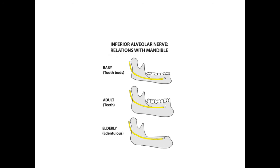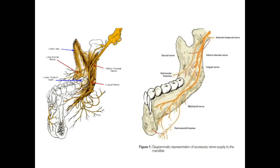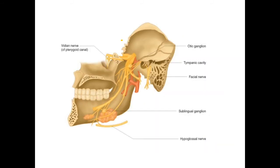Always remember that as the patient grows older, the inferior alveolar nerve comes more crestal. So always remember that the nerve will be more crestal in elderly patients. We always say go buccal, and there is a reason — the lingual nerve is on the lingual aspect, sometimes very close to the lingual surface of the mandible. So always go a little buccal, because we also have denser bone on the buccal side in the mandible.